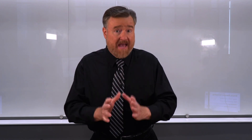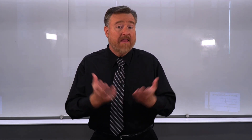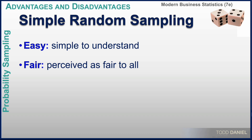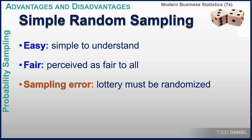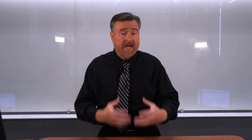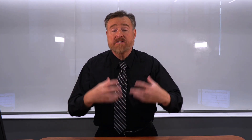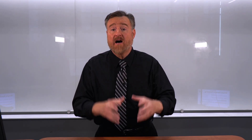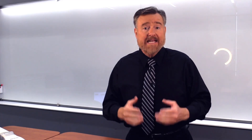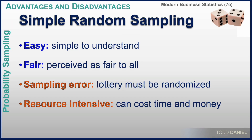There are many advantages of using simple random sampling. The first is that simple random sampling is easy, simple to understand, and perceived as fair to everyone. However, we do have the problem of sampling error — especially if the tickets in the hopper, the names in the hat, or the ping pong balls are not sufficiently randomized, we could have a non-random sample. Another disadvantage is that simple random sampling can be resource intensive, increasing the amount of time or money required to get a good sample.